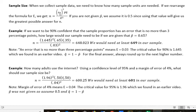When we collect sample data, we need to know how many sample units are needed. If we rearrange the formula for margin of error, we can get this formula for n, that is to know what the size of our sample should be. And that is the critical value z alpha over 2 squared and then p hat times q hat over e squared.